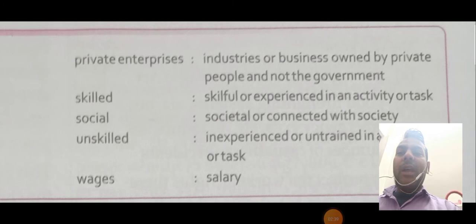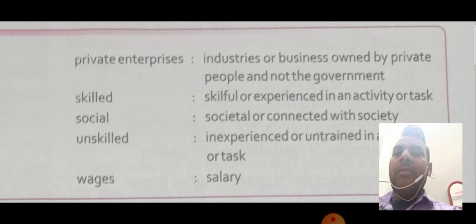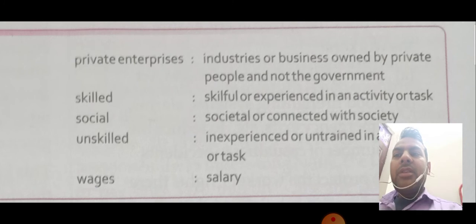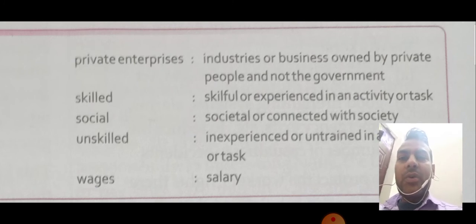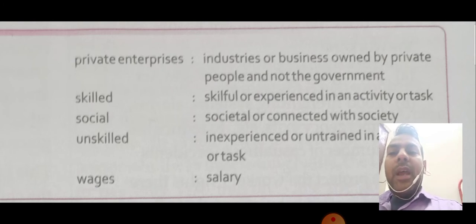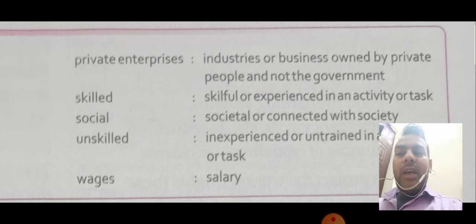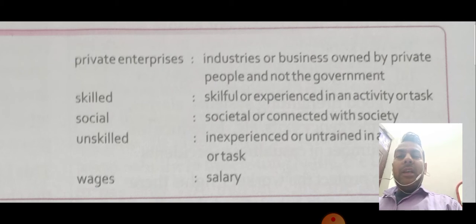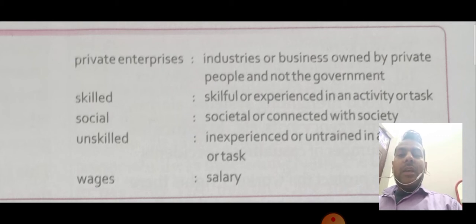Next key term is 'private enterprises.' It means an industry or business owned by private people and not the government. कोई भी company, institution, या organization जो किसी individual person के द्वारा run की जा रही हो, जिसका owner एक private person है — जो भी government के अंदर नहीं है, वो सारी चीज़ें private कहलाती हैं। Next is 'skilled' — skillful or experienced in an activity or task. किसी भी activity में जो person skillful या experienced हो, जिसे उस काम को कैसे करना है बहुत अच्छे से पता हो, ऐसे person को हम skilled person कहते हैं।